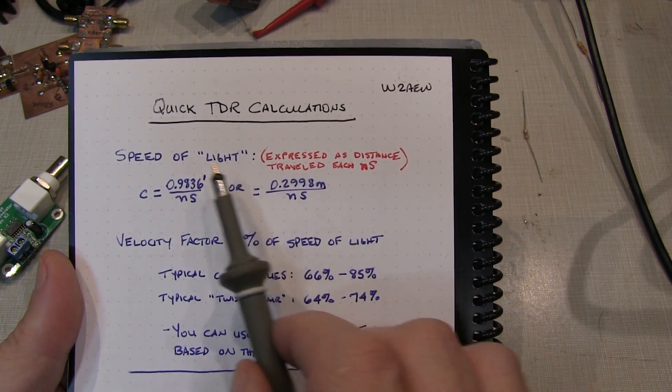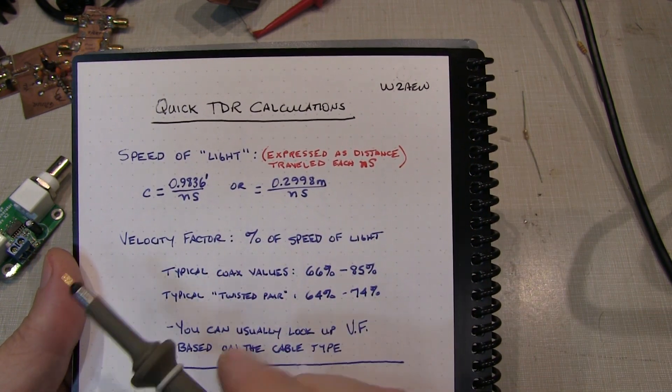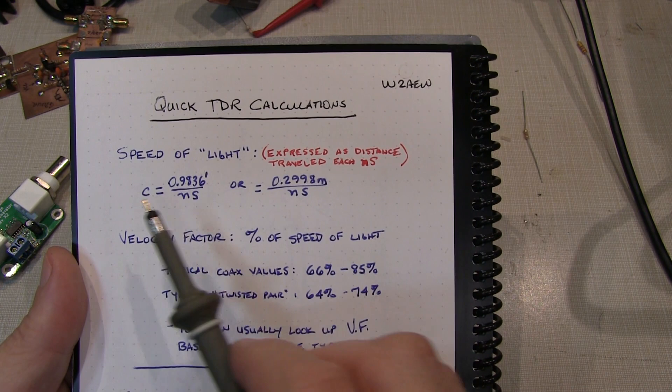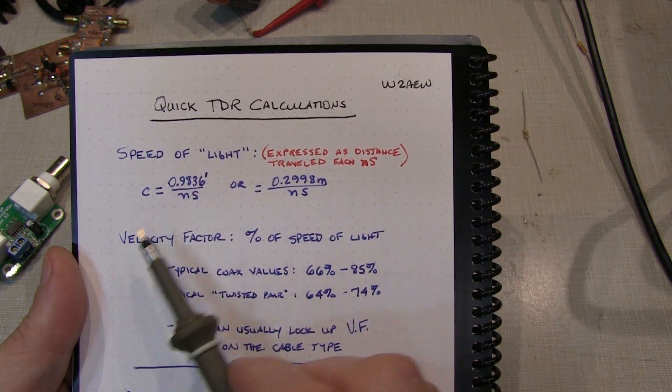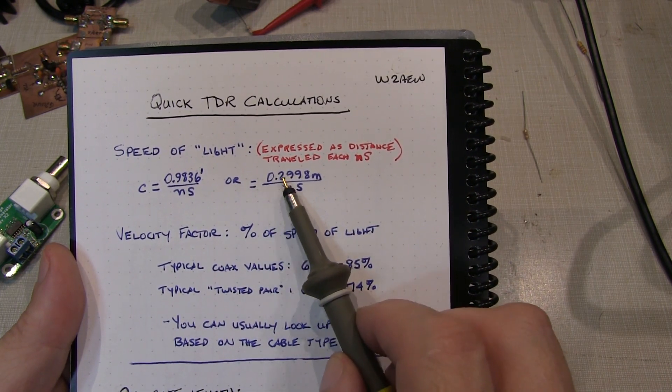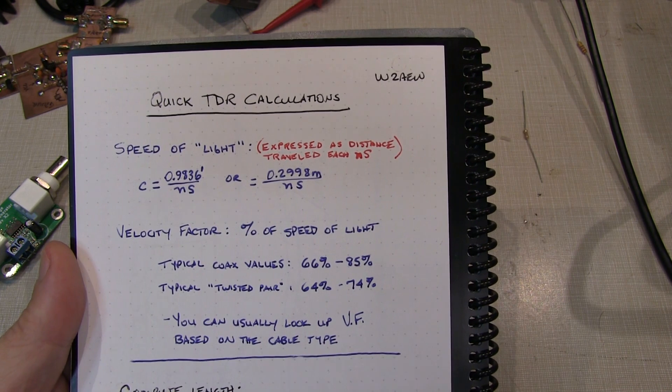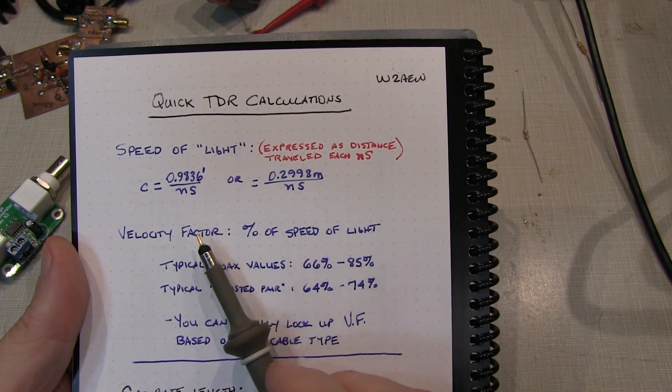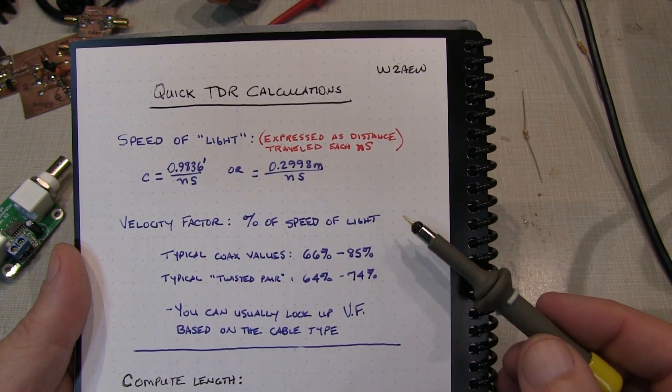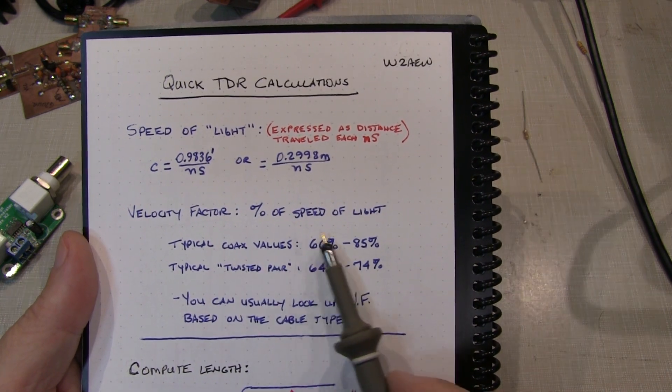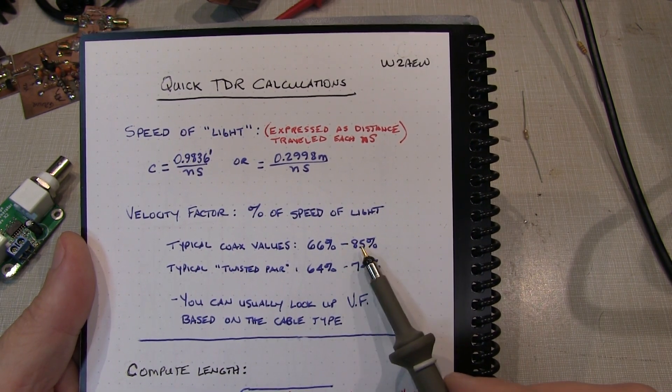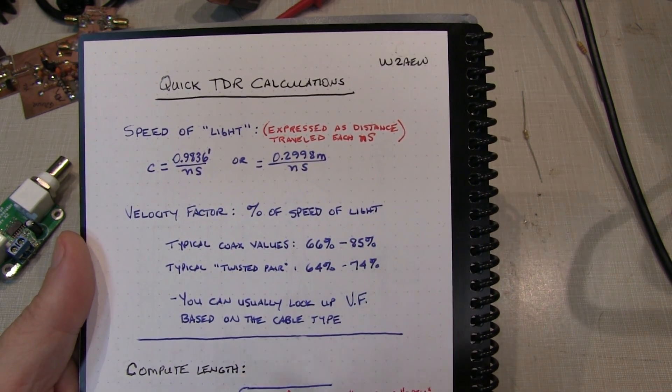So once you've got that delta T, we can then go ahead and compute the length of that line. And so we start off by we need to know the speed of light. And for measuring the length of line, it's usually helpful to express it in either feet or meters, depending on your preference. So the speed of light in feet per nanosecond is 0.9836 feet per nanosecond, or 0.2998 meters per nanosecond. Now we also have to know the velocity factor for the particular cable or coax or transmission line that we're measuring. Typical values for coax will range from maybe 66% for like RG58, up to 85% or even sometimes a bit faster for some other types of coax.